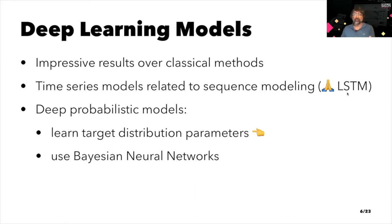The majority of the classical forecasting methods only focus on point forecasts, which in some sense are forecasting only the mean or the median of the future distribution. In the deep learning setting, to obtain probabilistic forecasts, there's two approaches. One approach is to learn the target distribution parameters, and the other approach is to use Bayesian neural networks. Today, I'll concentrate on this method of learning target distribution parameters.